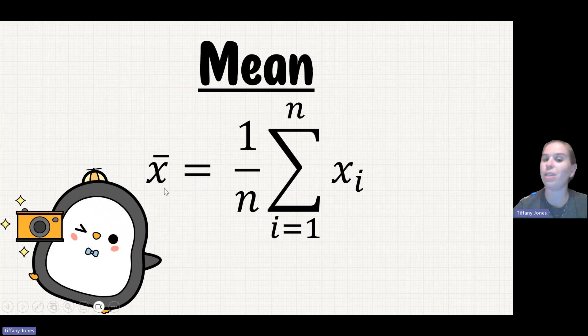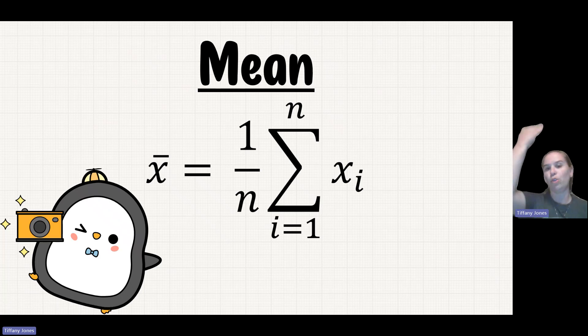Here we see the equation for mean. We have X bar is equal to the mean, 1 over N, N being our sample size. I equals 1, and then our X_i is looking at each of those individual values. This little E shape stands for summation, so it's telling us that we're going to add each of the values going from our first value to however number of values I have in my sample.